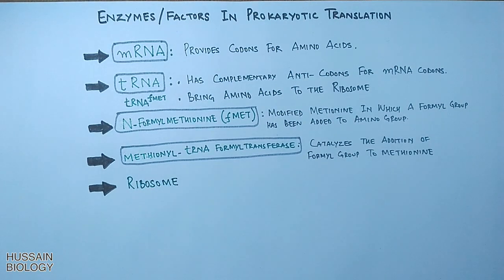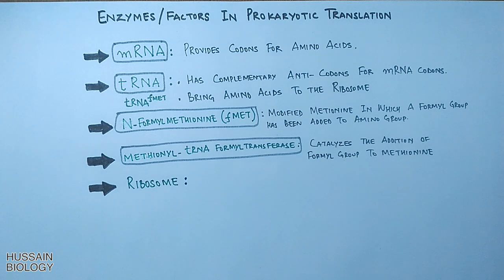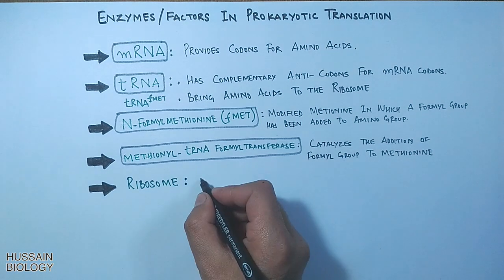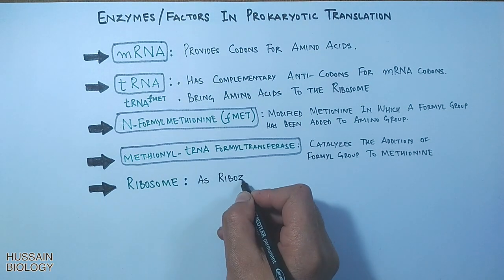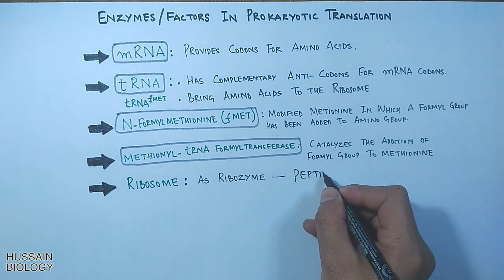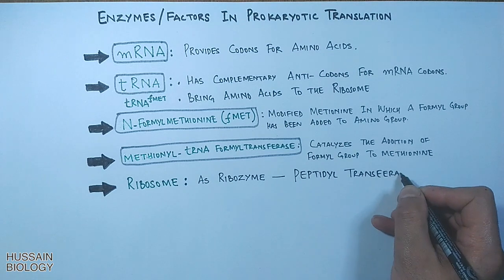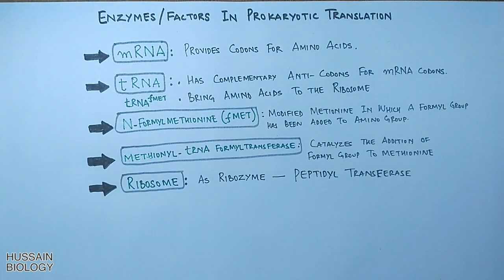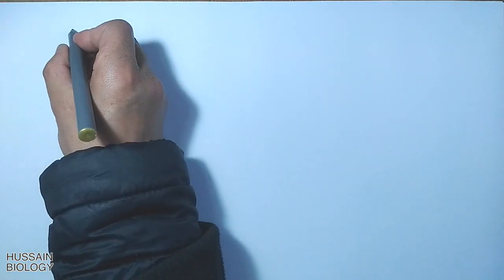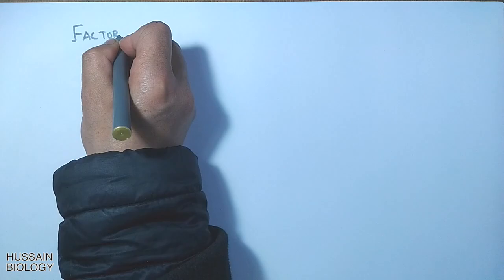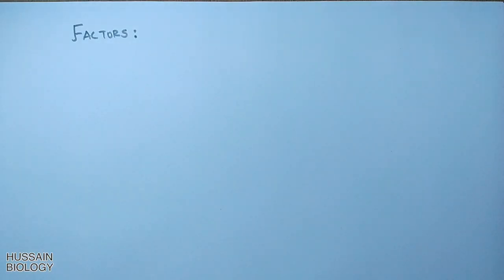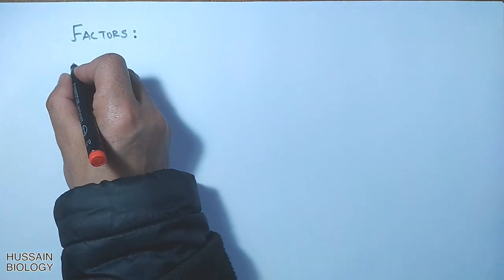Most important of all is the ribosome, which is the site of translation. The ribosome has diverse functions: to summarize precisely, the small subunit holds the mRNA molecule, and the larger subunit shows peptidyl transferase activity, thus acting as a ribozyme. Now let's see the factors of prokaryotic translation — first we have the initiation factors.